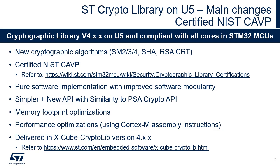This slide highlights the main changes made to the library available for STM32U5. New cryptographic algorithms are supported: SM versions 2, 3, and 4, SHA, and RSA CRT. The modularity of the library has been improved. It offers a new API aligned with PSA Crypto API. Code size and performance are optimized thanks to some parts designed in assembly language. The library is delivered in Xcube Cryptolib version 4XX.